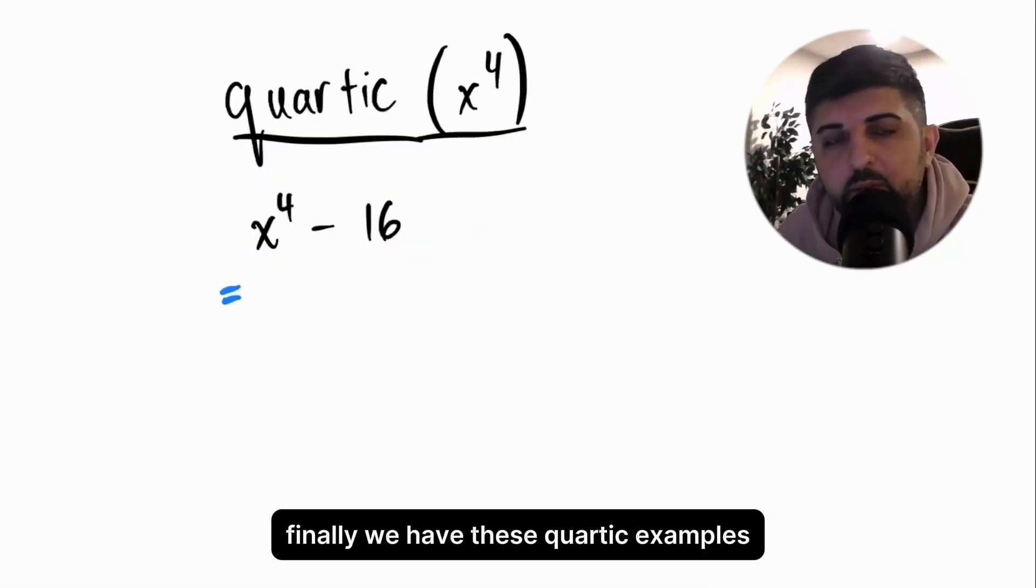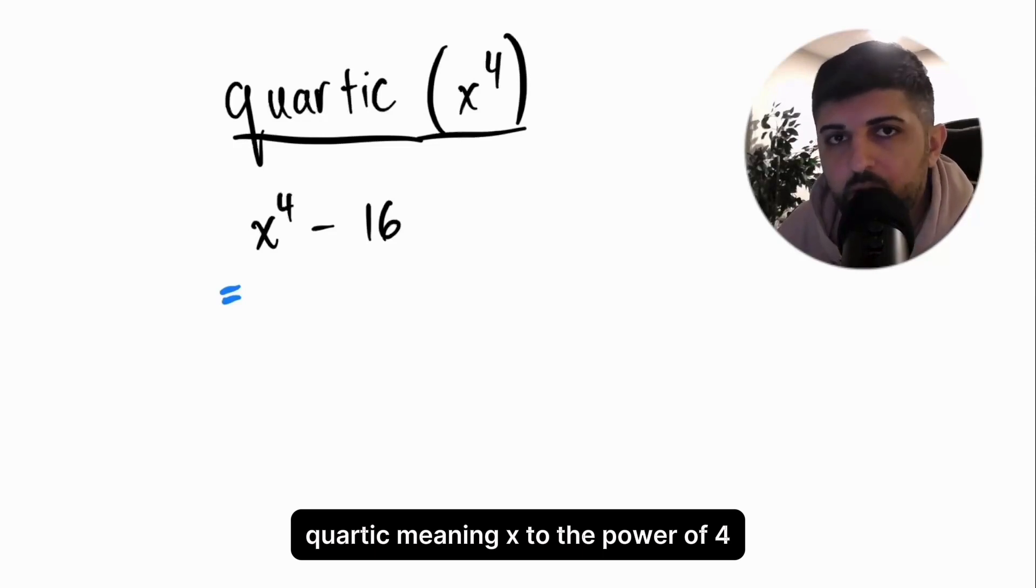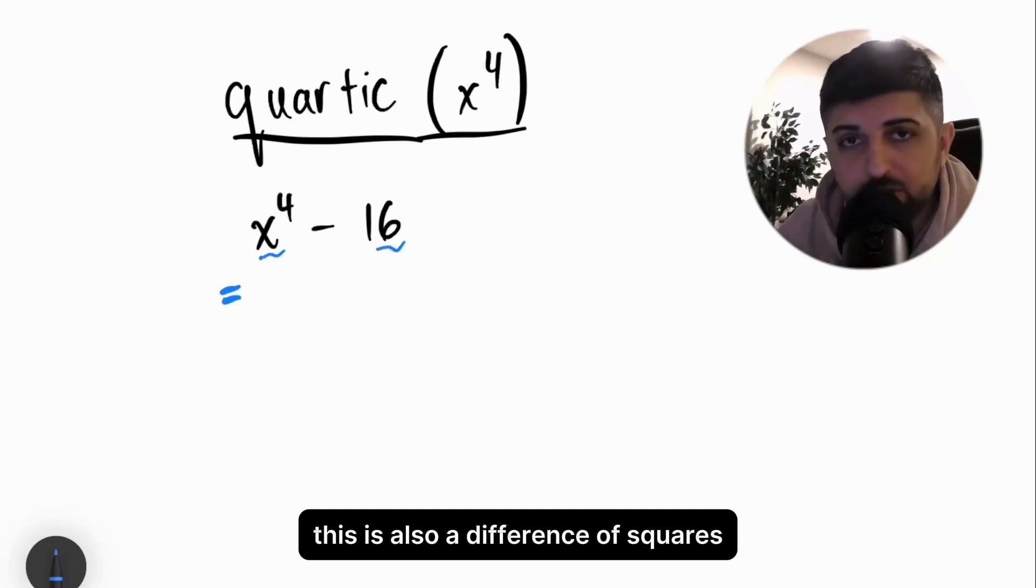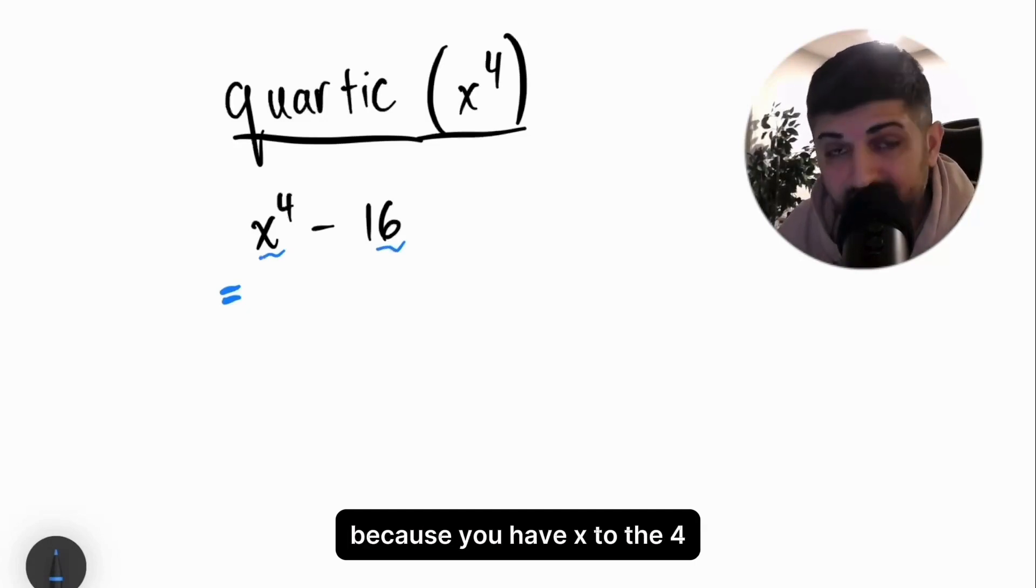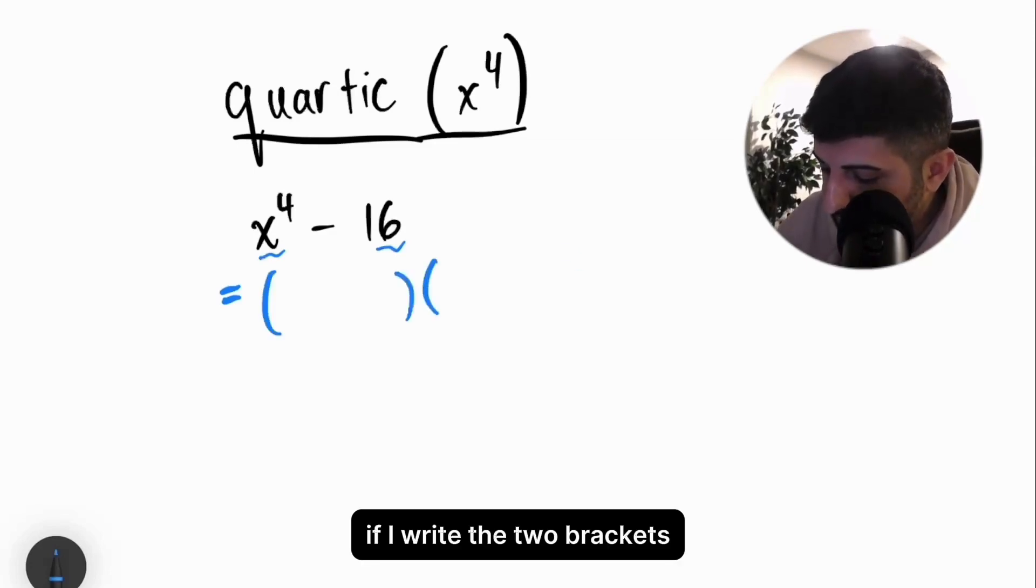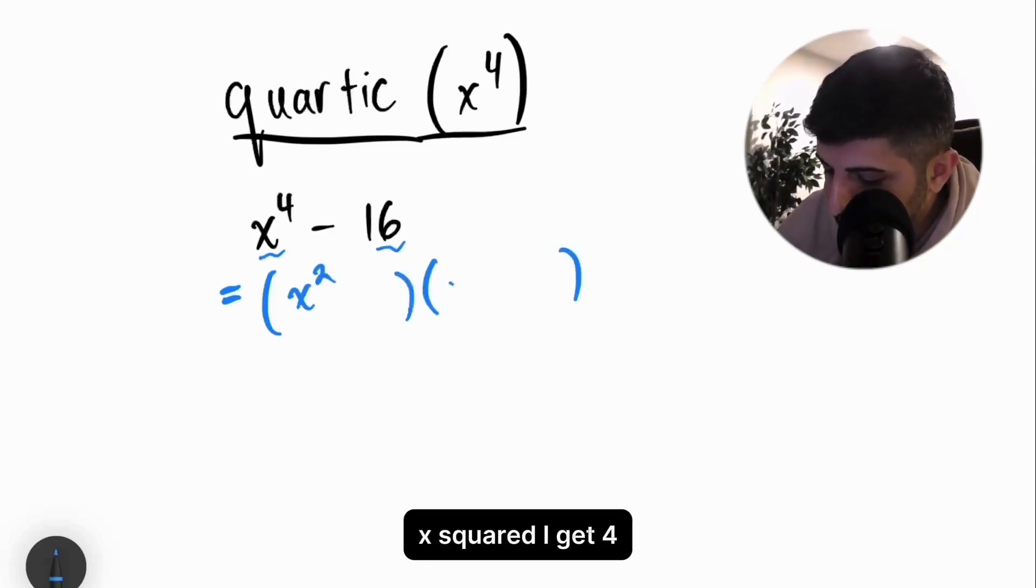Finally, we have these quartic examples. Quartic meaning x to the power of 4. How do I factor these? In this case, this is also a difference of squares because you have x to the 4, which is square rootable and 16 square rootable. Here we go. If I write the two brackets, I get x squared, x squared. I get 4, 4 and then I put minus plus.